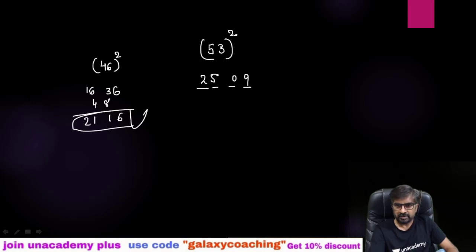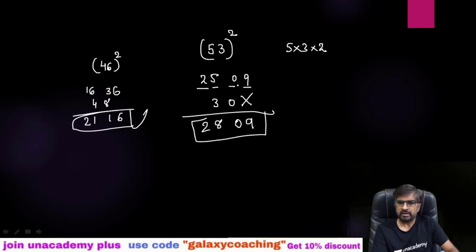Now what you need to do is put up a cross here and multiply five into three. Five threes are 15, twos are 30. So keep your 30 here. Now add 9, 0, 8, 2. So square of 53 is this. You can find out square of any number like this.